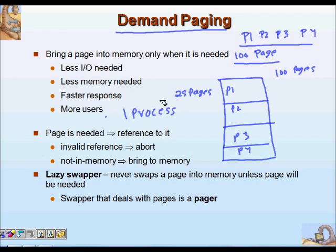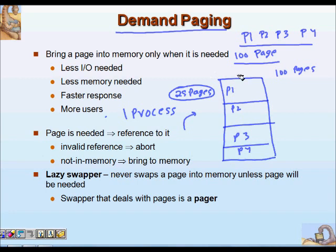The problem is that not all of the code that is written is actually executed. Even if you bring all 100 pages of P1 into memory, not all of them will be executed. In most code, there are parts that are usually never executed, like exception handling for extraordinary cases. Most of the time, 25 pages are enough for execution. So bring those 25 pages and they will be executed, allowing all four processes to run.